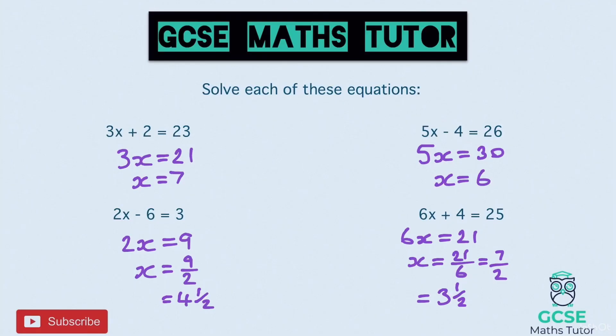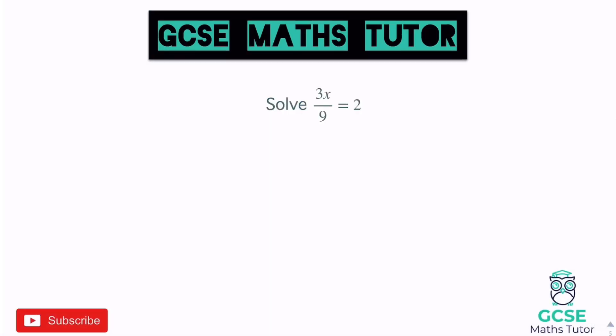That covers solving equations with whole numbers and non-integers with fractions. Now let's look at some more. Solving 3x divided by 9 equals 2 — whenever we've got a fraction, everything on the top is locked in by the number on the bottom, which here means divide by 9.